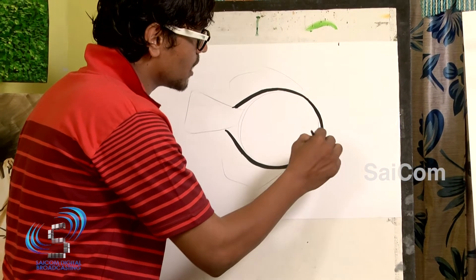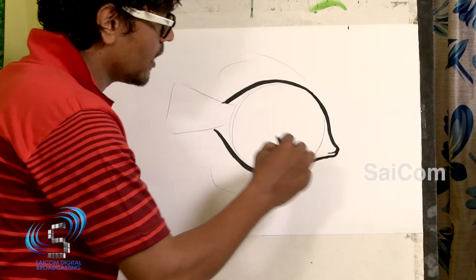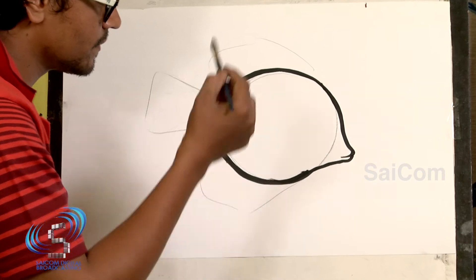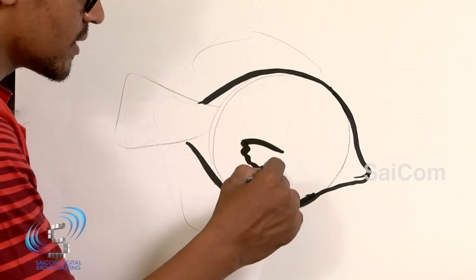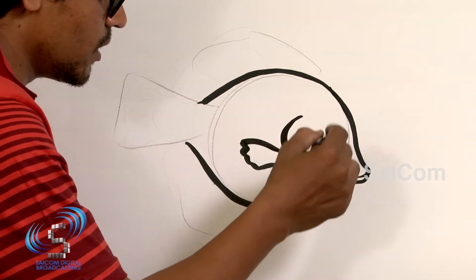Now make a small shape here and end like this. Now small zigzag line inside, half circle.